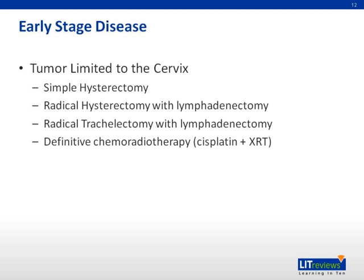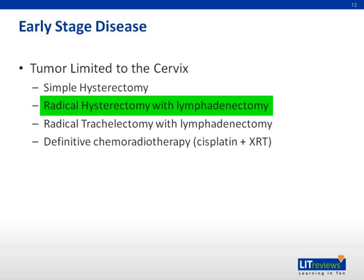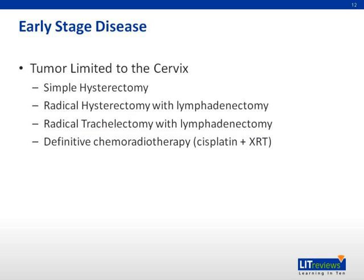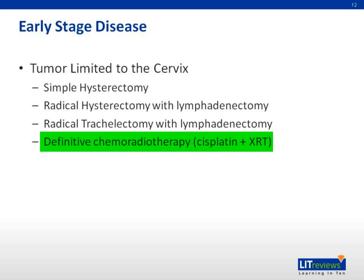Early stage disease is limited to the cervix and is less than four centimeters in size. If disease is pre-invasive, a simple hysterectomy can be performed. Disease limited to the cervix and less than four centimeters can be treated using radical hysterectomy with lymphadenectomy, consisting of en-bloc resection of the cervix, uterus, parametria, tubes, and upper one-third of the vagina, with pelvic and para-aortic lymph node excision. If the patient is young and desires future fertility, radical trachelectomy can be considered, preserving the corpus of the uterus and the tubes. Finally, the patient may decline surgery and instead undergo definitive chemoradiation, consisting of daily pelvic radiation with weekly cisplatin for a total of usually five weeks.